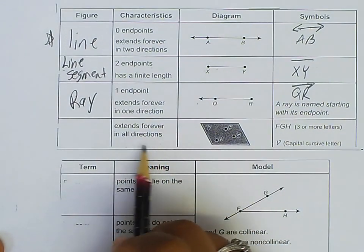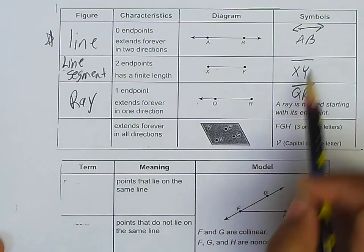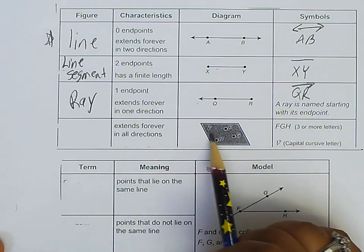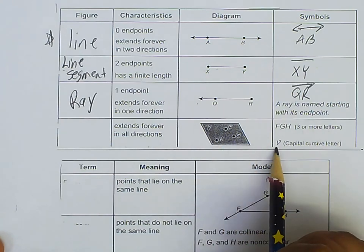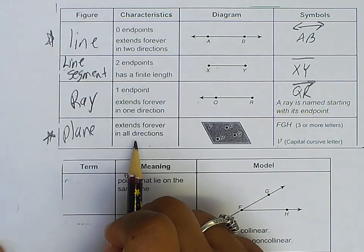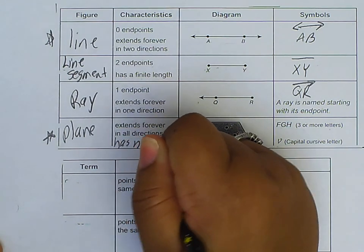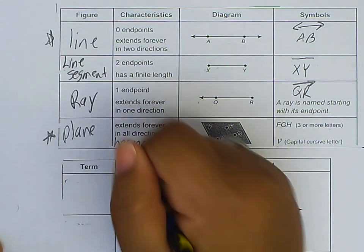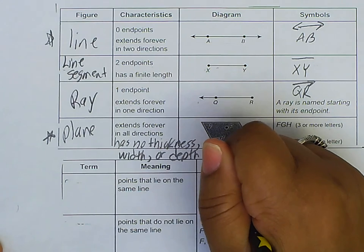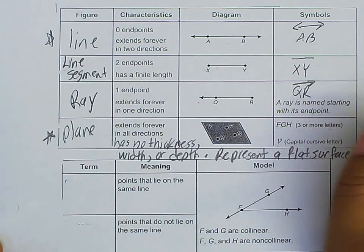So this one here extends forever in all directions. And sorry, the letters are a little hard to see. This is a stylized V, and then you have F, H, and G. There's really no symbols, but you can name it with three or more letters that are in the plane. So you can call it F, G, H. Doesn't matter what order. Or you can name it with the capital letter that's italicized, or it can be plane V. So this will be a plane. Let's add: has no thickness, width or depth, and it represents a flat surface.